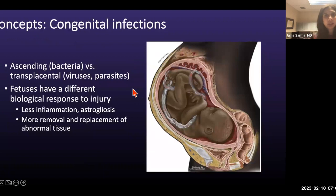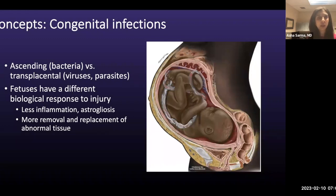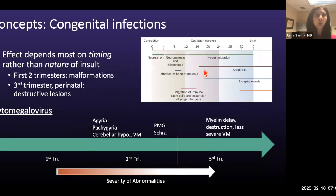Some general background on congenital infections: there are two main routes of transmission — ascending infections, which are mainly bacterial and come from the birth process, versus transplacental infections, which are usually viral or parasitic. Fetuses have a different biological response to injury than patients with more mature CNS. They don't form gliosis or inflammation in the same way, and there's more removal and replacement of abnormal tissue. The effect of infection depends more on the timing than the nature of the insult.